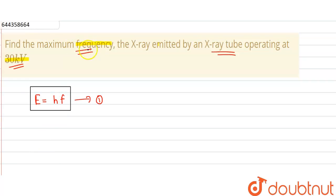For maximum frequency, the total kinetic energy must be converted to the X-ray photon. The kinetic energy of electrons is equal to eV. We'll call this equation number 2.